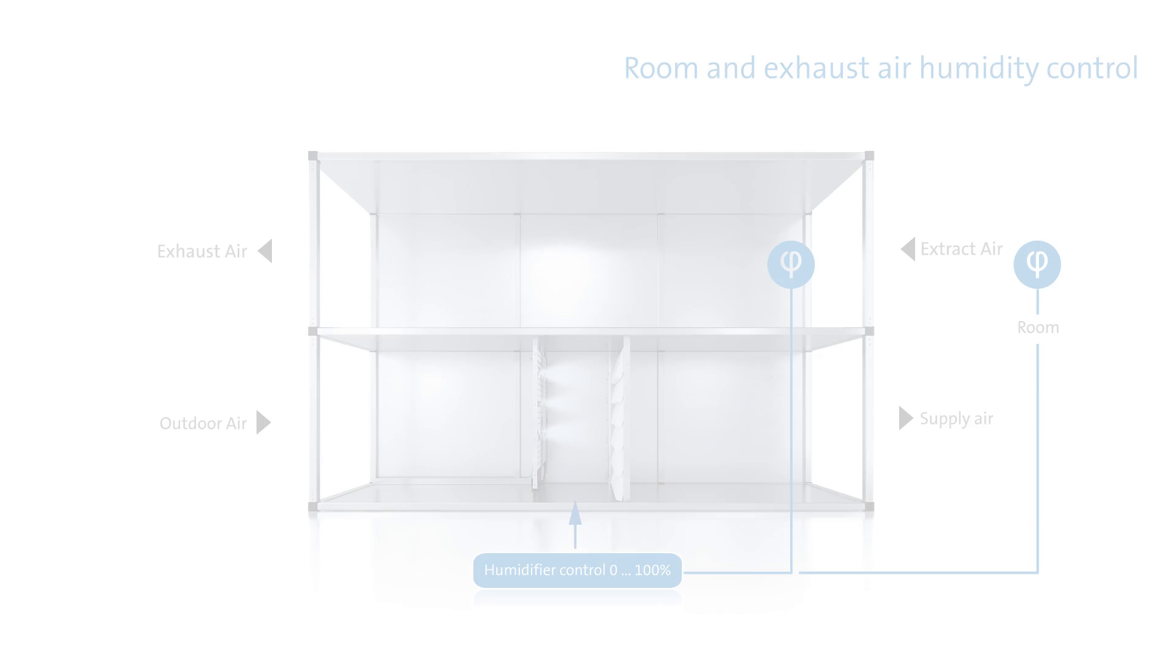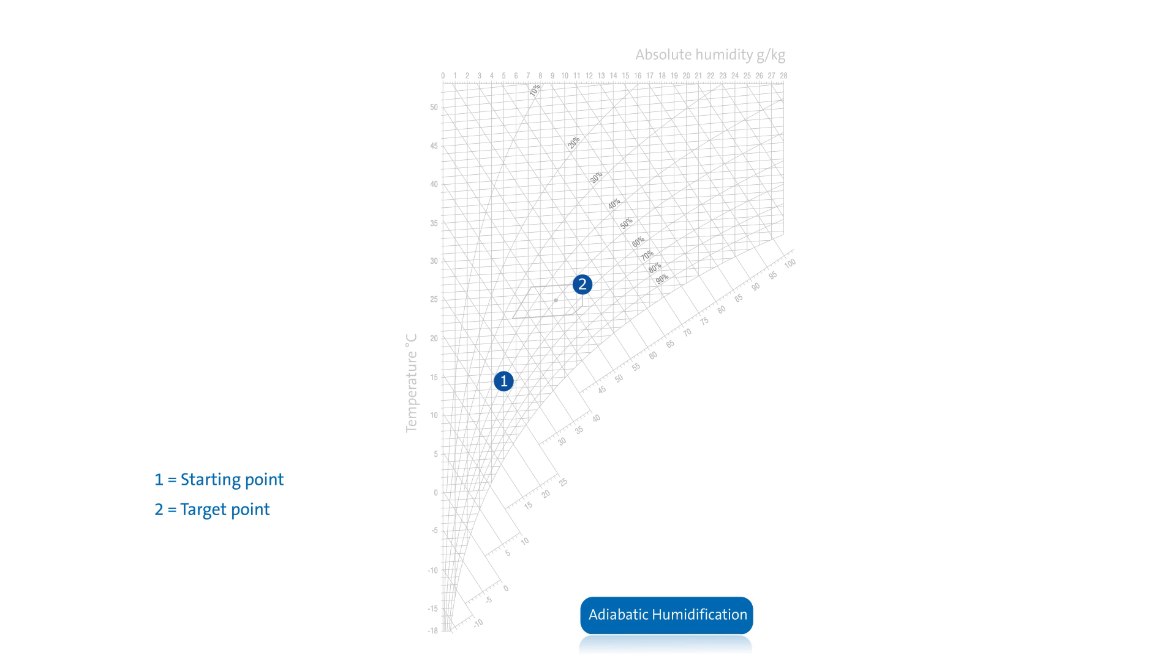The control system for an adiabatic humidifier must also take the adiabatic temperature drop into consideration. In this case, an enthalpy or a dew point control system are appropriate choices to provide control.